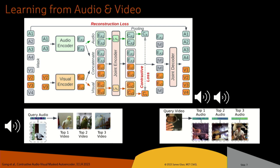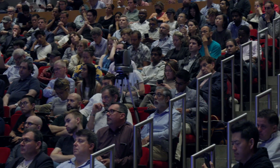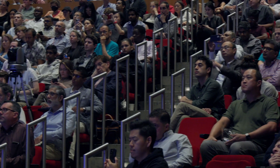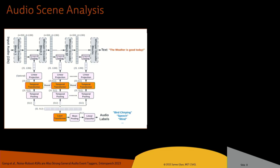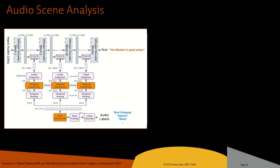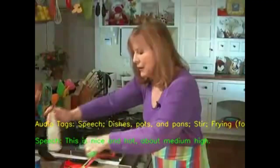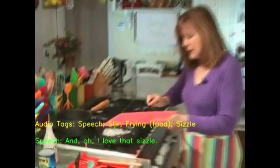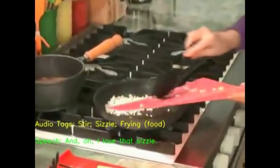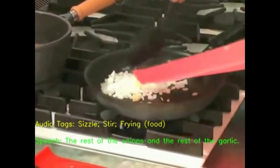All of this learning is being done automatically without any labels whatsoever. You can combine all of these perceptual models to do a general form of scene analysis — speech recognition to transcribe what's being said, and audio classification to list background sounds. For example, here in yellow we have the audio tags, and in green we have the speech. This is nice and hot, medium-high. Oh, I love that sizzle. The rest of the onions and the rest of the garlic. And you can imagine combining that with vision as well.